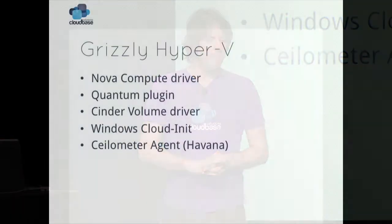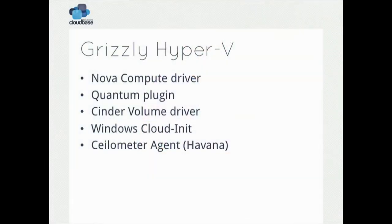For the Grizzly release, we have a Nova compute driver that was already introduced in Folsom. Hyper-V was put outside of OpenStack with the Essex release, so we came with Folsom. Folsom contains the bare minimum support in Nova, and from that moment on we worked like crazy for this release. We did an enormous amount of work — the Nova driver is very complete now, completely refactored compared to the Folsom one, definitely feature complete and production grade.